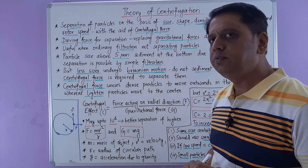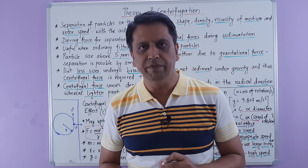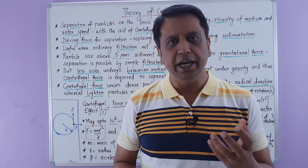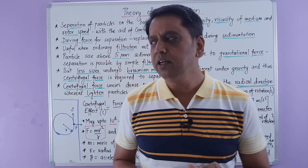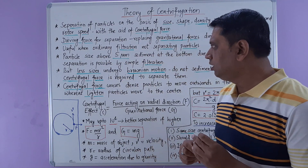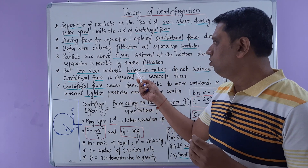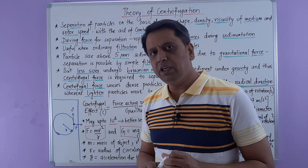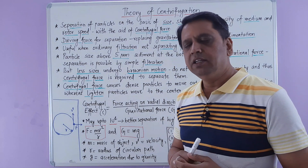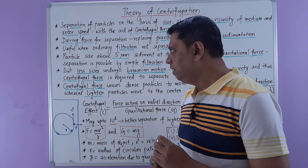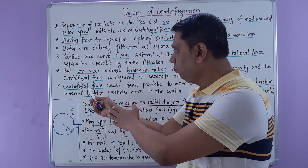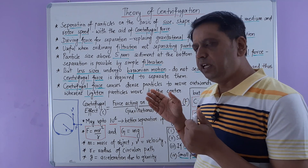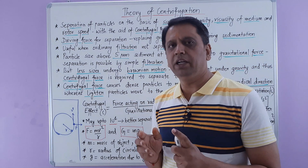Particles with a size above five micrometers sediment at the bottom simply with the help of gravity. However, particles having a size less than five micrometers undergo Brownian motion and do not sediment under simple gravity. That is why they require centrifugal force to separate out properly, making centrifugation preferable over filtration for small particles.